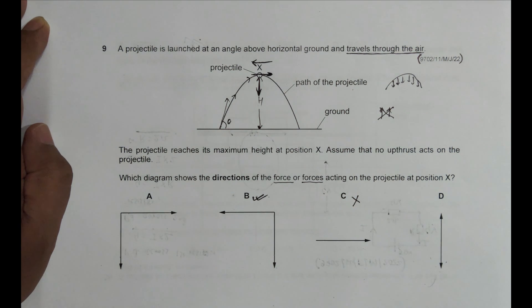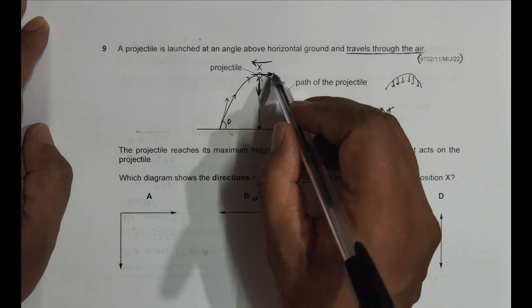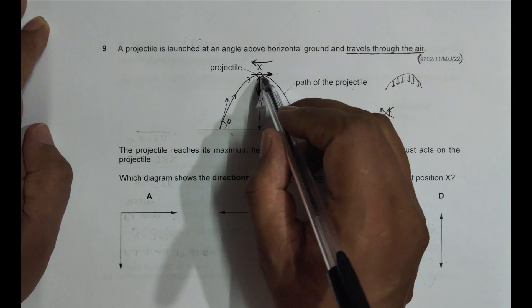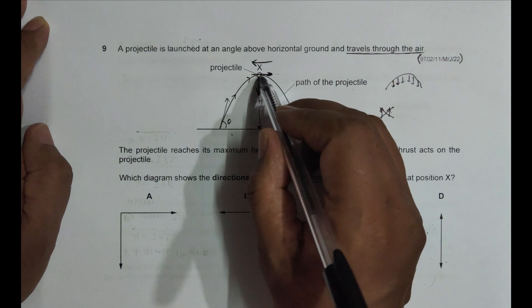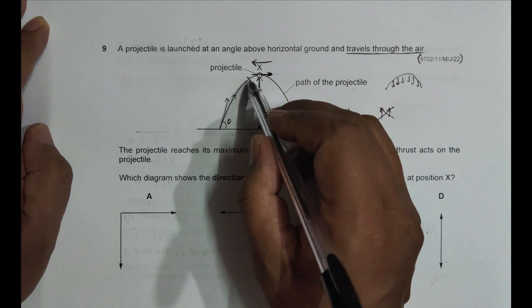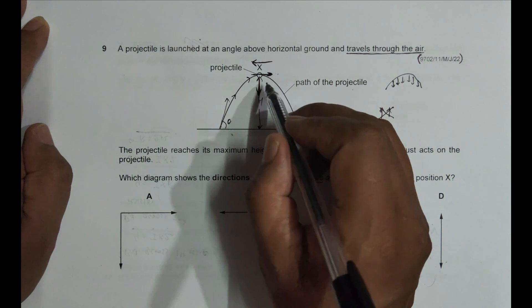If you look at the other choices, here we have one of them is A. So in A, it says the force experienced is to the right, which is not possible at this time. Its direction is like this, it is because of the resultant of the velocity here.